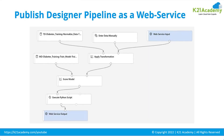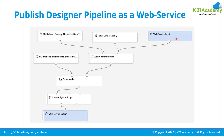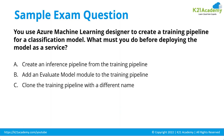Another important feature is the Azure ML Designer. For beginners, the two key features of Azure Machine Learning are automated ML and the Designer for creating pipelines. When deploying, you create an inference pipeline with a web service input and a web service output. The question asks: when using Azure ML Designer to create a training pipeline for a classification model, what must you do before deploying the model as a service? You need to first create an inference pipeline from the training pipeline.